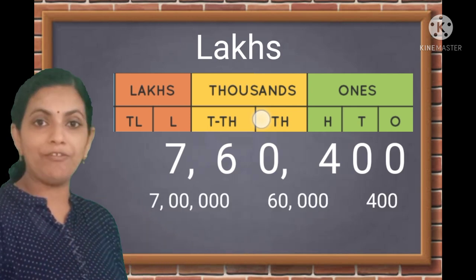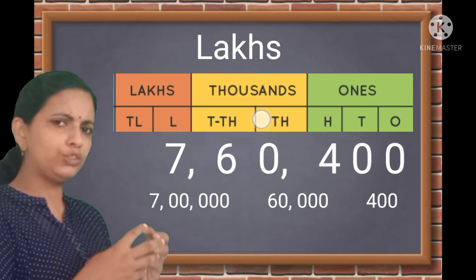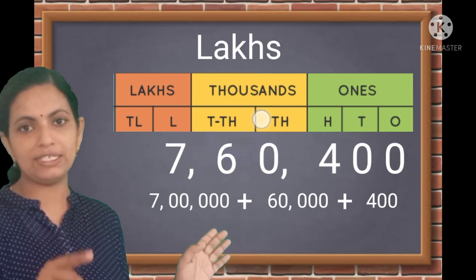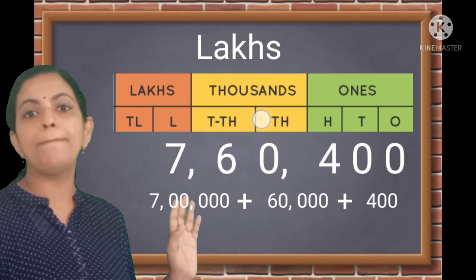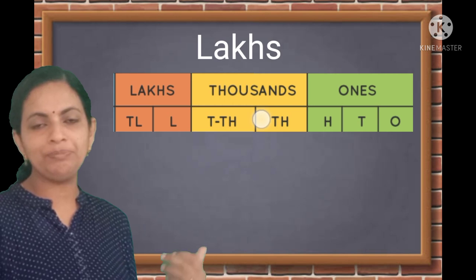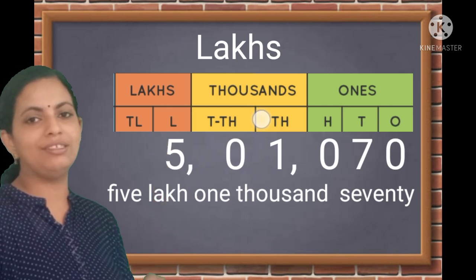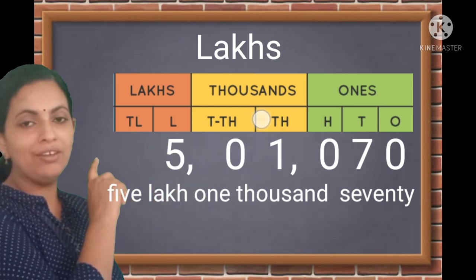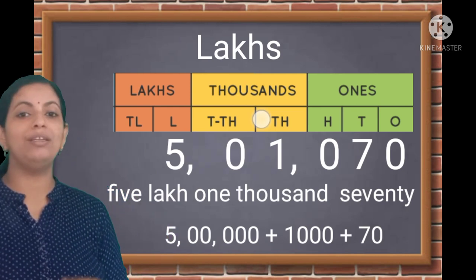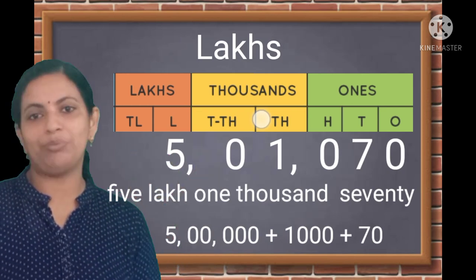This number is formed by seven lakhs, six ten-thousands, and four hundreds. The expanded form is: seven lakh + sixty thousand + four hundred. Zeros, as they have no value, need not be written. Now, let me give another number: five lakh one thousand seventy. Writing it along with the places makes it easy to read. The expanded form is five lakh + one thousand + seventy. I hope you all understood how to read and write numbers up to lakhs.